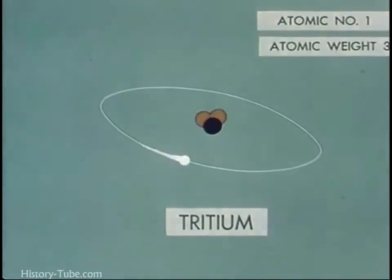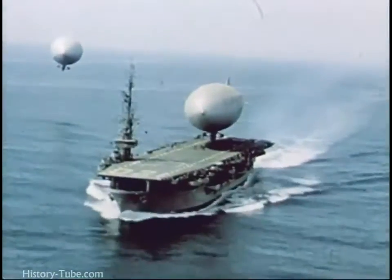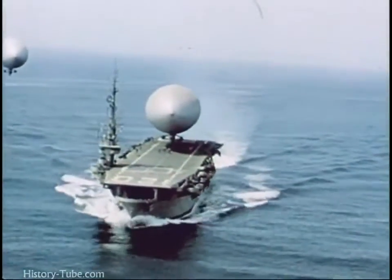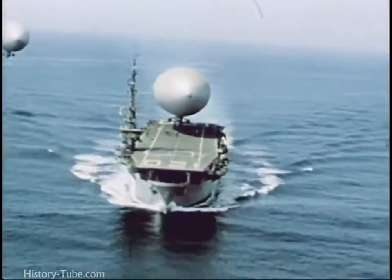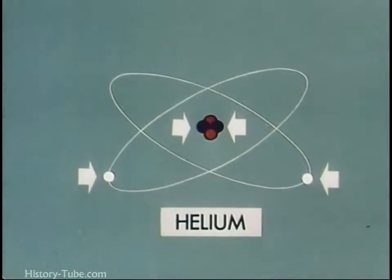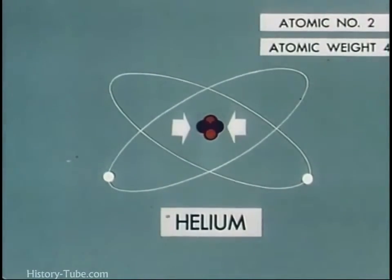One rung above hydrogen on the ladder of elements is helium. One of the uses for helium you're probably familiar with is in lighter-than-air aircraft. A helium atom has two electrons and a nucleus composed of two protons plus two neutrons. So helium has the atomic number two, same as the number of protons it possesses, and an atomic weight of four — its protons plus neutrons.